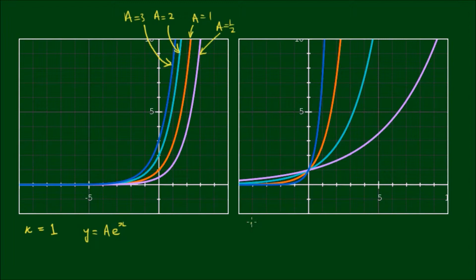On the right hand side here, we keep A as a constant, A equals 1, and we choose different values of k. So the equation is y equals e to the kx.